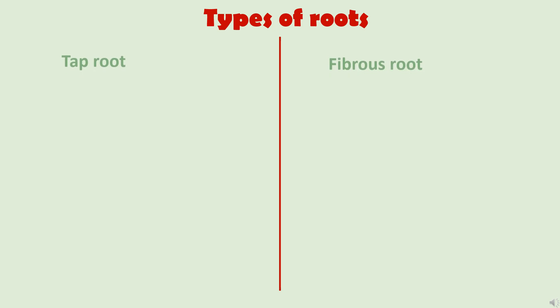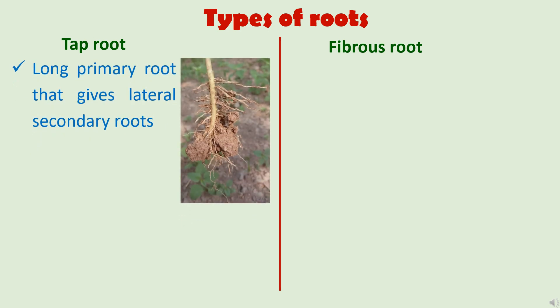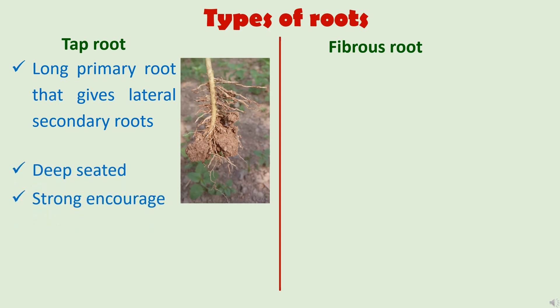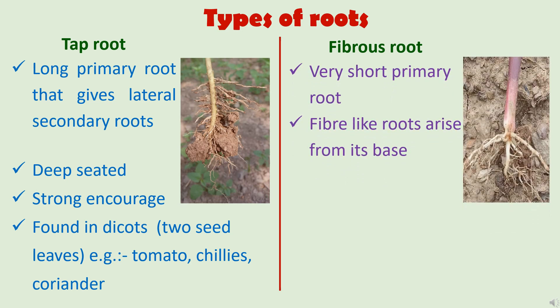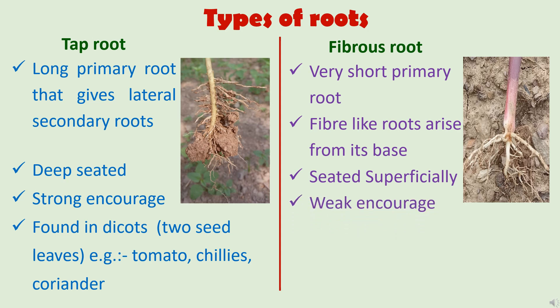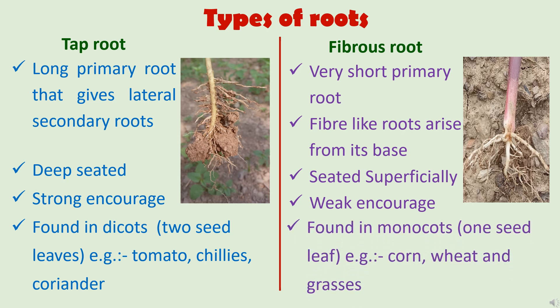Now, types of roots. There are two types: tap roots and fibrous roots. In tap roots, the primary root is quite long and gives rise to lateral secondary roots. They are deep-seated, which is why they provide strong anchorage to the plant. Tap roots are found in dicots — plants with two seed leaves — examples are tomato, chili, and coriander. In the fibrous root system, the primary roots are very short and give fiber-like roots from the base. They are seated superficially just below the ground, so they provide weak anchorage to the plant. Fibrous roots are found in monocots — plants with only one seed leaf — examples are corn, wheat, and most grasses.